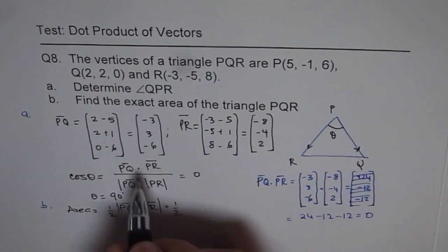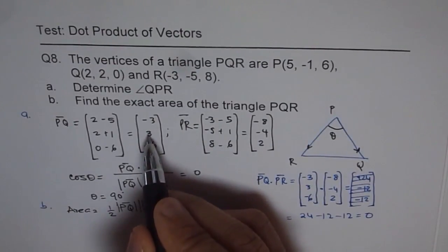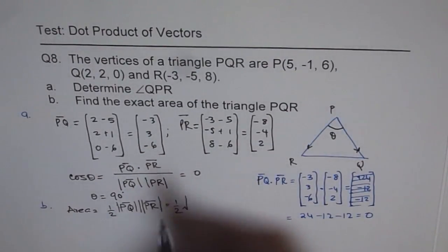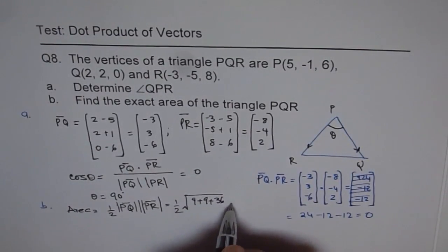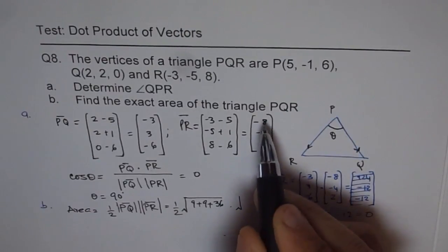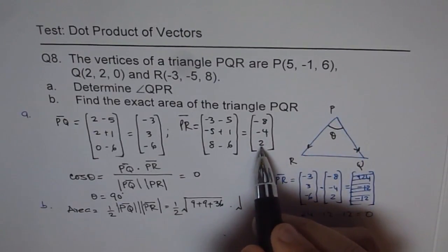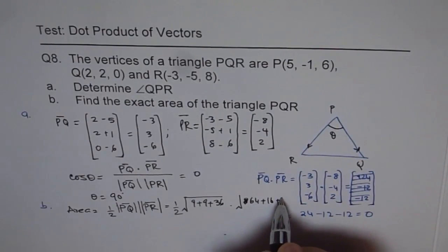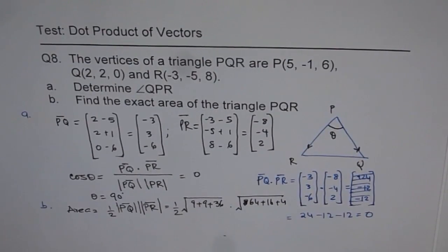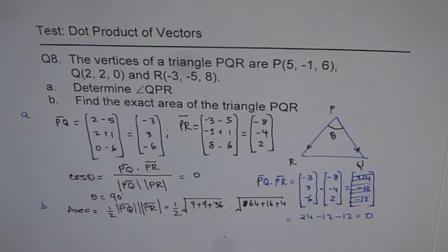Just calculate the area. Area is square root of (3 squared plus 3 squared plus 6 squared), so let me write this as 9 plus 9 plus 36, times square root of (8 squared plus 4 squared plus 2 squared), which is 64 plus 16 plus 4. Calculate this answer to find the exact answer. That gives you the area of the given triangle. I hope the process is clear to you. Thank you.